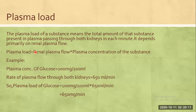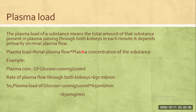What we need to measure in the plasma load is the renal plasma flow times the plasma concentration of the substance. We compare the renal plasma flow to the plasma concentration of the substance. Why do we need to measure plasma flow? Because the plasma load depends on how much plasma flows.